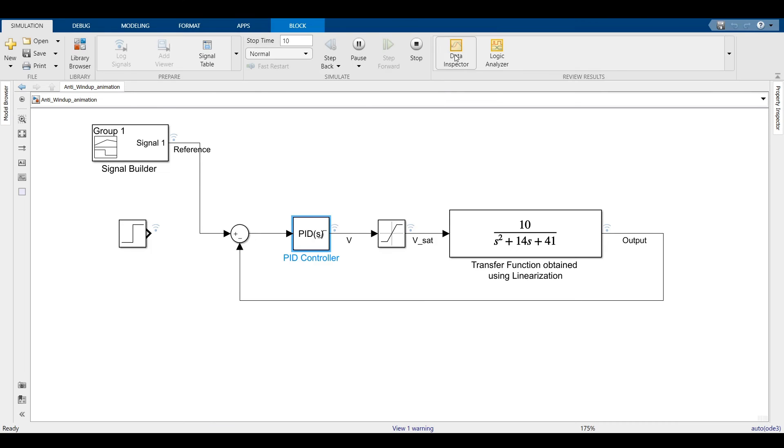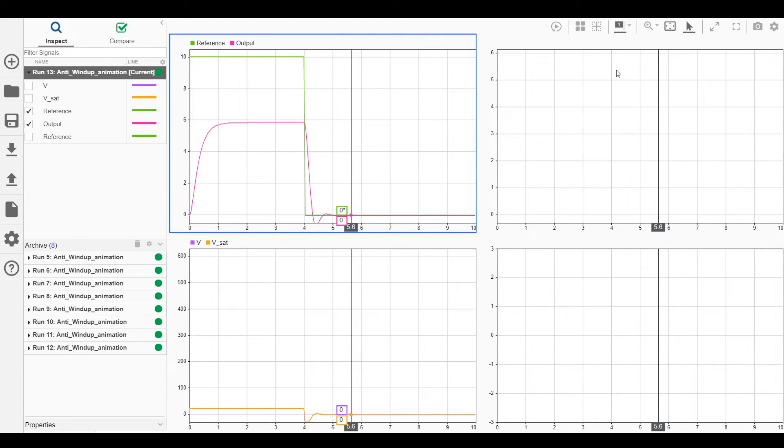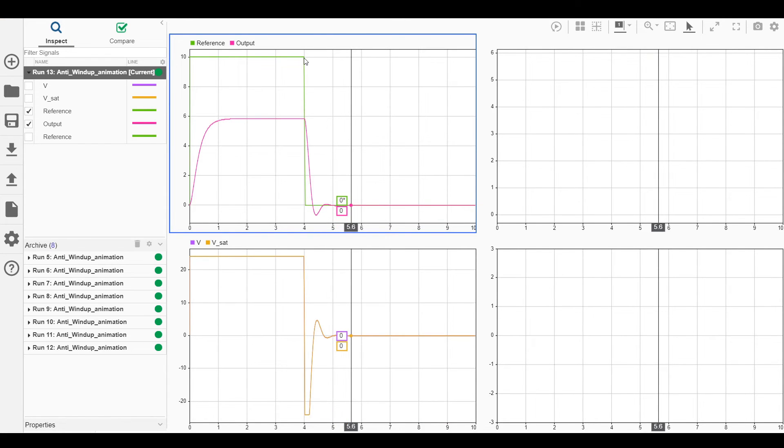Let us turn it on, simulate it again and check the results. Now the speed stops dropping again as soon as the reference goes to zero. So now we know the scenarios in which the integrator will not perform well and how to solve that issue by clamping the integrator.